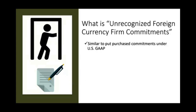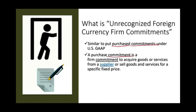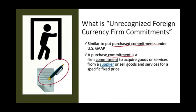An unrecognized foreign currency firm commitment is very similar to a purchase commitment under US GAAP. A purchase commitment is when you make a commitment — it could be signed, it could be oral — but you make some sort of firm commitment that you cannot back out of, to acquire goods or services from a supplier or to sell goods or services for a fixed price. Basically, you've locked in your prices.